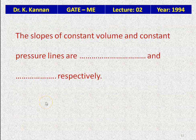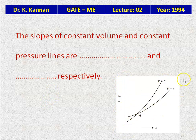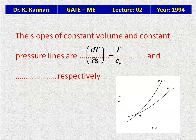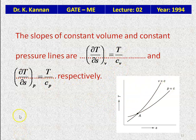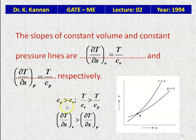In the T-S diagram, the slope of the constant volume line is ∂T/∂S|v = T/Cv, and the slope of the constant pressure line is ∂T/∂S|p = T/Cp. Since Cp > Cv for any gas, T/Cv > T/Cp, so the slope of the constant volume line is greater than the slope of the constant pressure line in temperature-entropy coordinates.